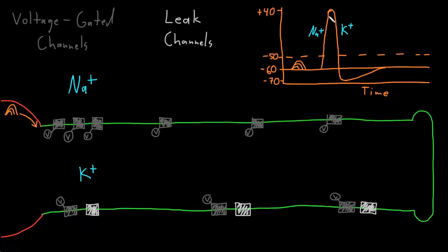So we have the rising phase of the action potential, the peak of the action potential, the falling phase of the action potential, and then this period of hyperpolarization at the end. This can be called the after-hyperpolarization, because it's the hyperpolarization that happens after the main action potential. It's also called the refractory period — because during this time, it's difficult or impossible to trigger another action potential in that part of the membrane.